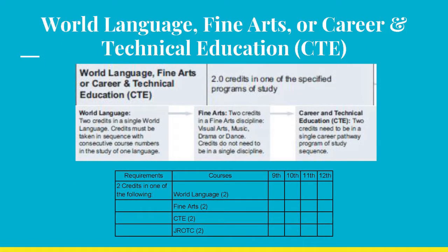In this next category, you must earn two credits in any one of the following categories: World Language, Fine Arts, or Career and Technical Education, otherwise known as CTE. In World Language, two credits in a single World Language must be earned. Credits must be taken in a sequence with consecutive course numbers in the study of one language — for example, earning credits in Spanish 1 and Spanish 2, not Spanish 1 and Japanese 1.